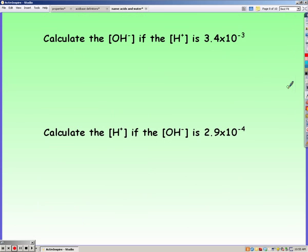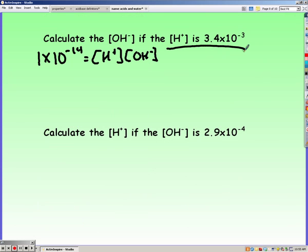So I can use that equation to calculate either hydrogen or hydroxide concentration, whichever one's not given. So I write my equation down. They gave me hydrogen ion concentration. So 1 times 10 to the negative 14th is equal to 3.4 times 10 to the negative 3rd times hydroxide.